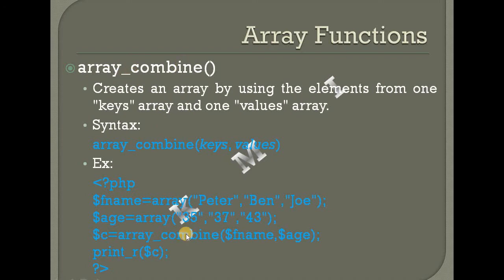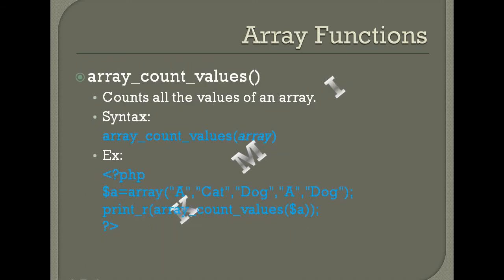Array combine: F_name and age. Array_count_values — it is used to count all the values of an array. This is the array of all values — counting.